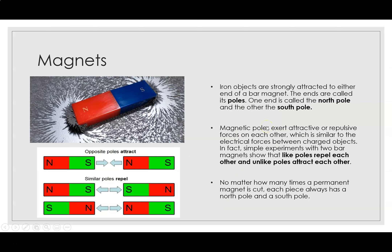For our discussion we will be focusing on a bar-shaped magnet. Iron objects are strongly attracted to either end of a bar magnet. The ends are called poles — one end is called the north pole and the other is the south pole. Magnetic poles exert attractive or repulsive forces on each other.